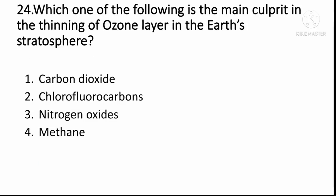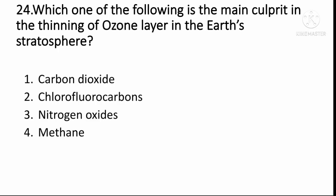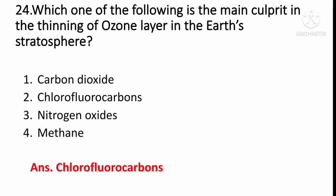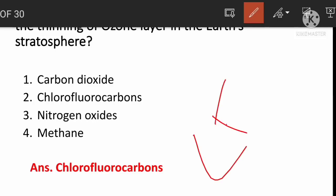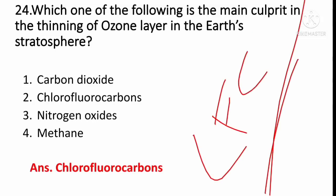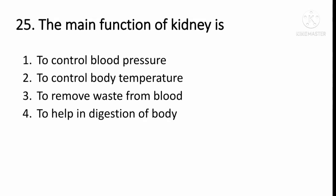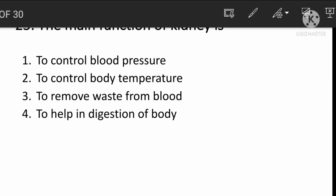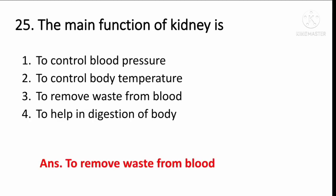Which one of the following is the main culprit in the thinning of the ozone layer in the Earth's stratosphere? The answer is CFC — chlorofluorocarbons. The main function of kidneys is to remove waste from blood.